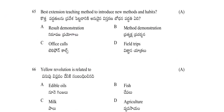The best extension teaching method to introduce new methods and habits is: result demonstration method, demonstration, office calls, or field trips. The answer is result demonstration — it is the correct method to introduce new methods and habits.